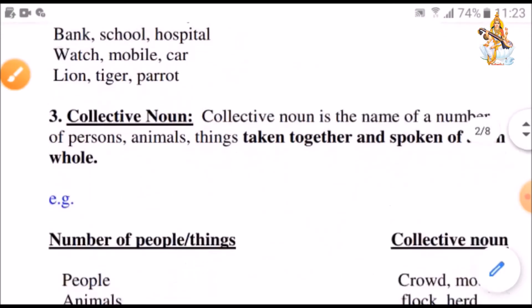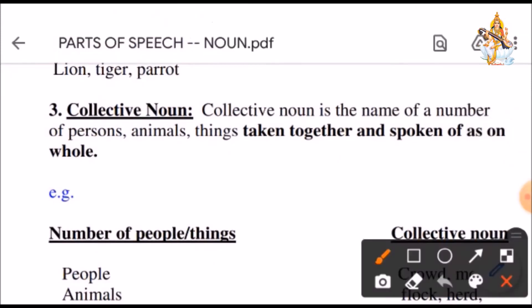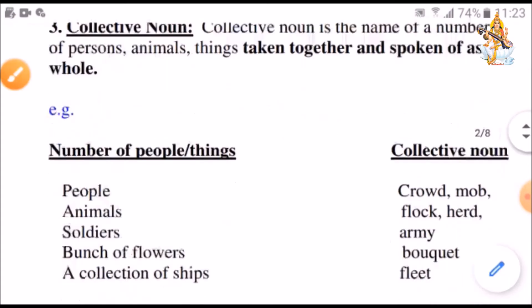Next is collective noun. Collective noun is the name of a number of persons, animals, things taken together and spoken of as one whole. So, when we talk about people in a group and give them one single name, they come under collective noun.